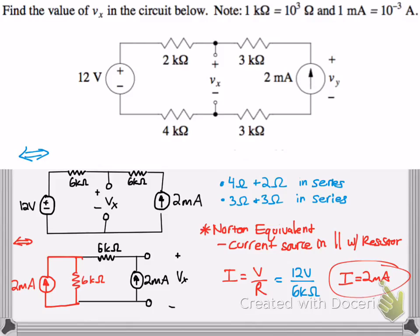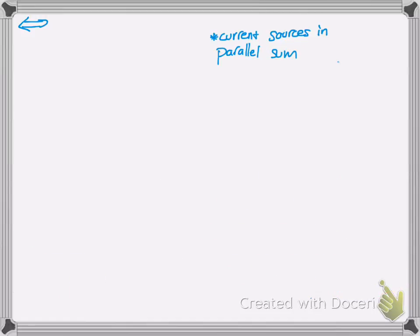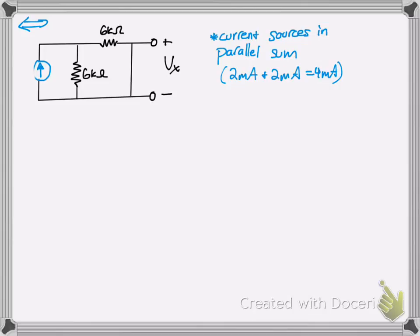Now, let's rewrite that circuit because the current sources actually sum when they're in parallel. See the red current source and the black current source? They actually sum together. Since they're pointing in the same direction, we can add them up into a single current source. 2 plus 2 is 4. So we got 4 milliamps as a single current source here.